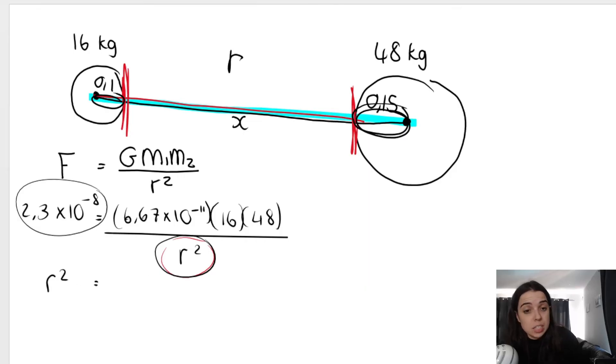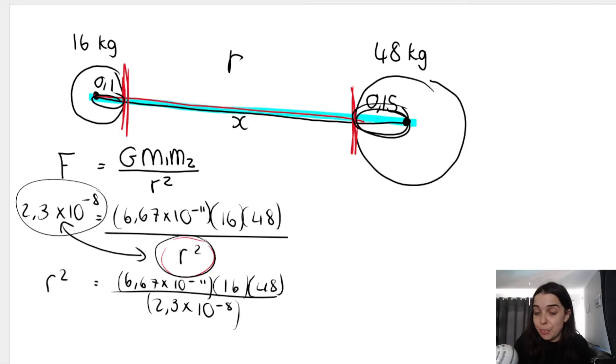So basically we're going to say R squared is equal to, everything at the top stays at the top, but then remember these things have swapped places. So at the bottom of here, it's going to be 2.3 times 10 to the negative 8. And I always recommend using scientific notation when you're doing this because otherwise some calculators go weird. And I'm just going to type the whole thing in on my calculator.